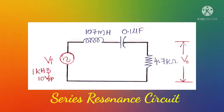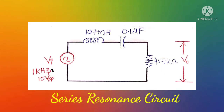The series resonance circuit contains an inductor of 107 millihenry, a capacitor of 0.1 microfarad, and a resistor of 4.7 kilo ohm, all connected in series. The input is supplied from the function generator set at 10 volts peak to peak sinusoidal signal, and the output is measured across the 4.7 kilo ohm resistor.